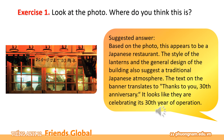The style of the lanterns and the general design of the building also suggest a traditional Japanese atmosphere. The text on the banner translates to 'thanks to you, 30th anniversary.' It looks like they are celebrating its 30th year of operation. Bức ảnh này cho thấy một nhà hàng mang phong cách Nhật Bản. Dòng chữ trên cái banner được dịch ra rằng nhờ các bạn, cảm ơn các bạn kỷ niệm lần thứ 30. Nó trông như có vẻ là nhà hàng đang tổ chức một cái buổi kỷ niệm năm thứ 30 hoạt động.